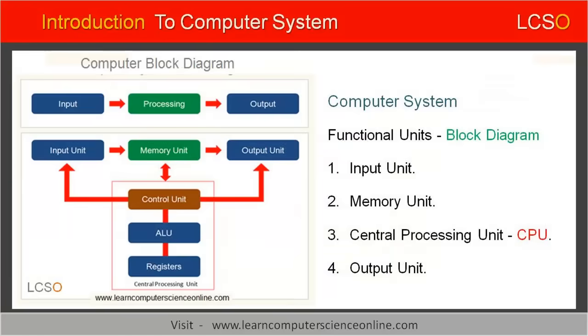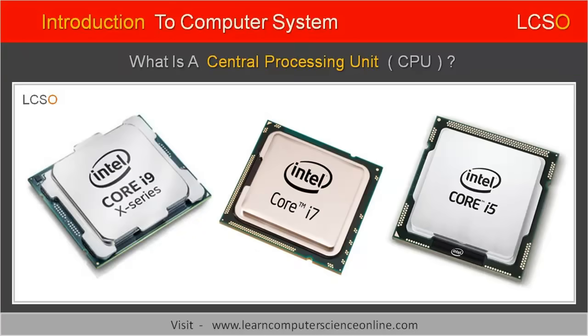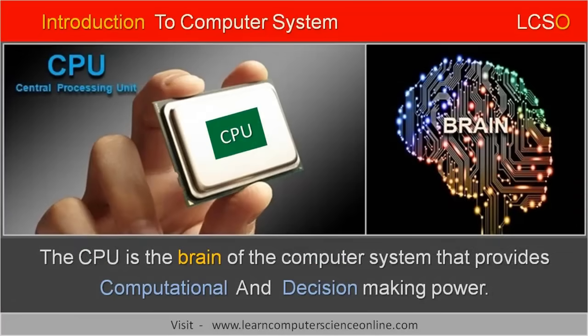The next unit of the computer is called the central processing unit, abbreviated as CPU. The CPU is also commonly referred to as a processor or a microprocessor. The CPU is the brain of the computer and provides the processing power to the computer system. The main function of the CPU is to execute the computer program.